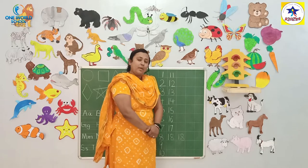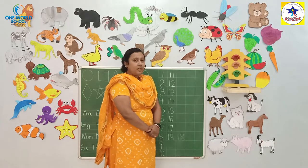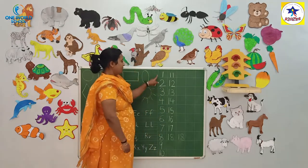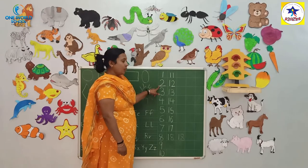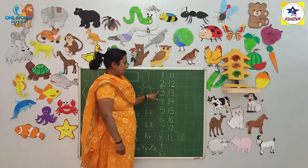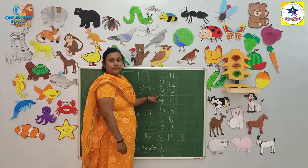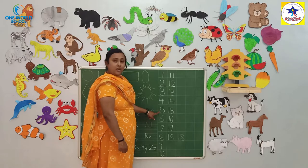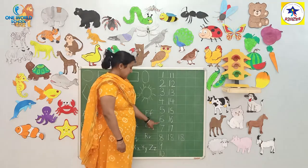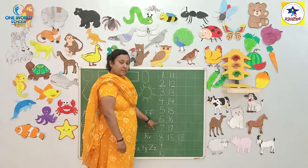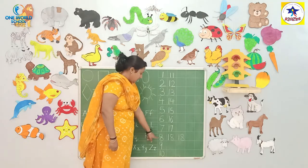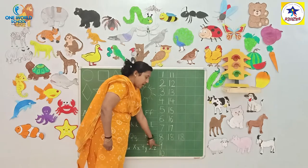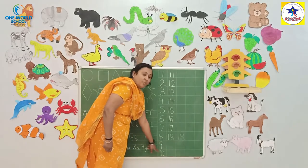वो कौन से नंबर होगा? मैं आपको बताऊँगा। ठीके? तो 1, 2, 3, 4, 5, 6, 7, 8, 9, 10.